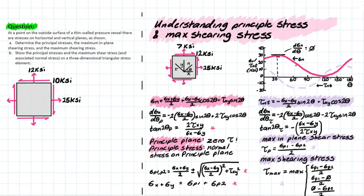If we only cared about the design, we only need to focus on the theta that creates the max stress on that face. We can look at a graph and plot all the different stress values generated on planes based on angle theta. The x-axis is theta, the y-axis is the possible values for shear and normal stress. The dark pink line is normal stress, the light pink dashed line is shear stress, and all these values represent a different plane. We have critical maximum and minimum values for both shear and normal stress.